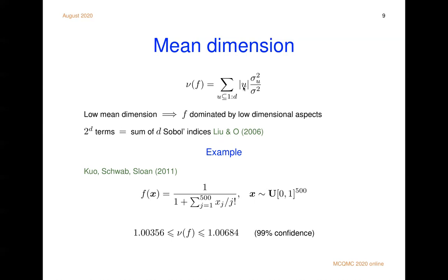This expression looks a little cumbersome because you have to add up 2 to the d terms. However, there's a sweet identity. You can do it by just adding d Sobol indices. You don't even have to estimate the individual sigma u's. So at least you can get the numerator of this quantity by adding up d Sobol indices.